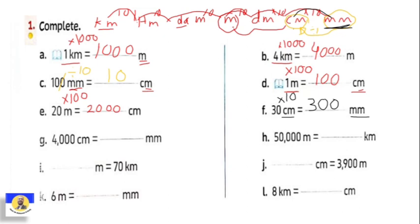Four thousand centimeters — we want to change to millimeters. From centimeter to millimeter, multiply by ten, because we change from the greatest (centimeter) to the smallest (millimeter). So we add one extra zero. We already have three zeros plus the one zero — that makes four zeros — so the answer is forty thousand millimeters.